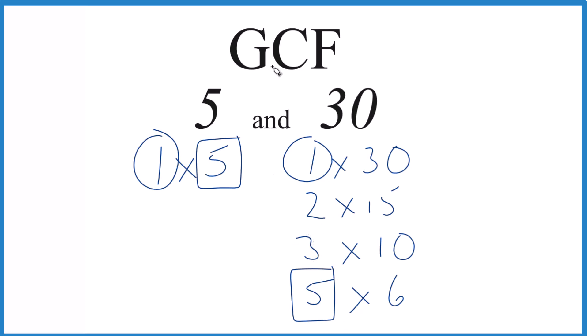So in answer to our question, the GCF for 5 and 30 is 5. You can do this with other methods, like prime factorization, but for numbers this small, this is usually pretty quick. It's Dr. B, thanks for watching.